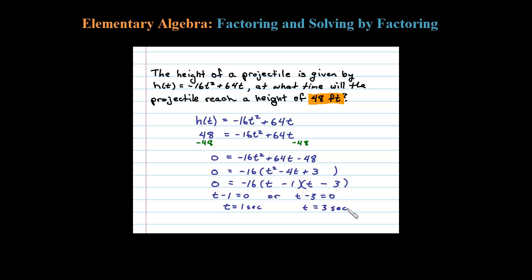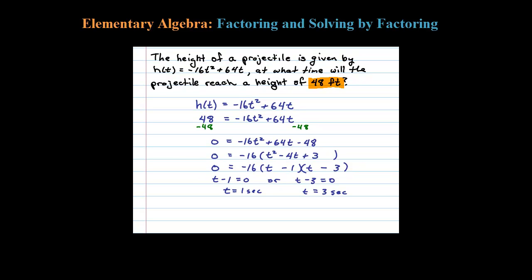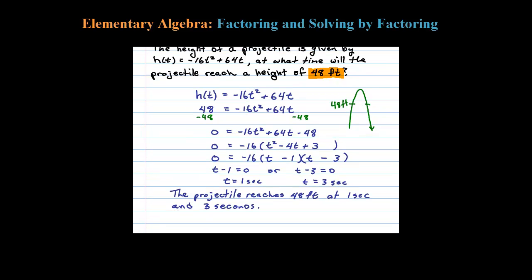So there's going to be two times where the height of the projectile reaches 48 feet, and that kind of makes sense. Think of the projectile as it goes up, it's going to come back down. It's going to take one second to get there, and then on the way back down, sometime later at three seconds, it's going to reach 48 feet. The solution set here does make sense to have two answers: one second and three seconds. The projectile reaches 48 feet at time equals one second and three seconds.